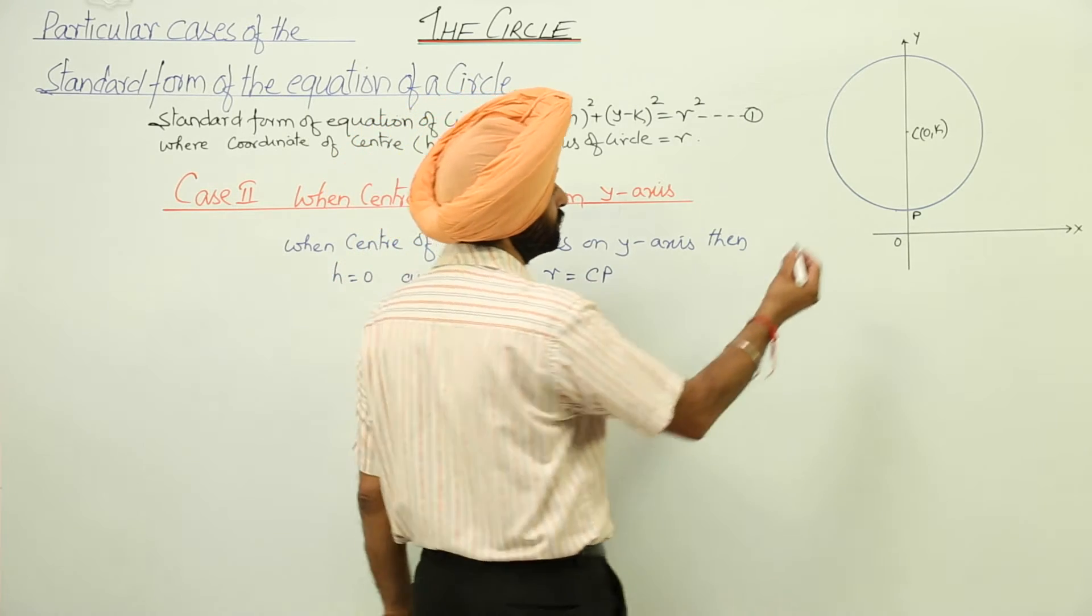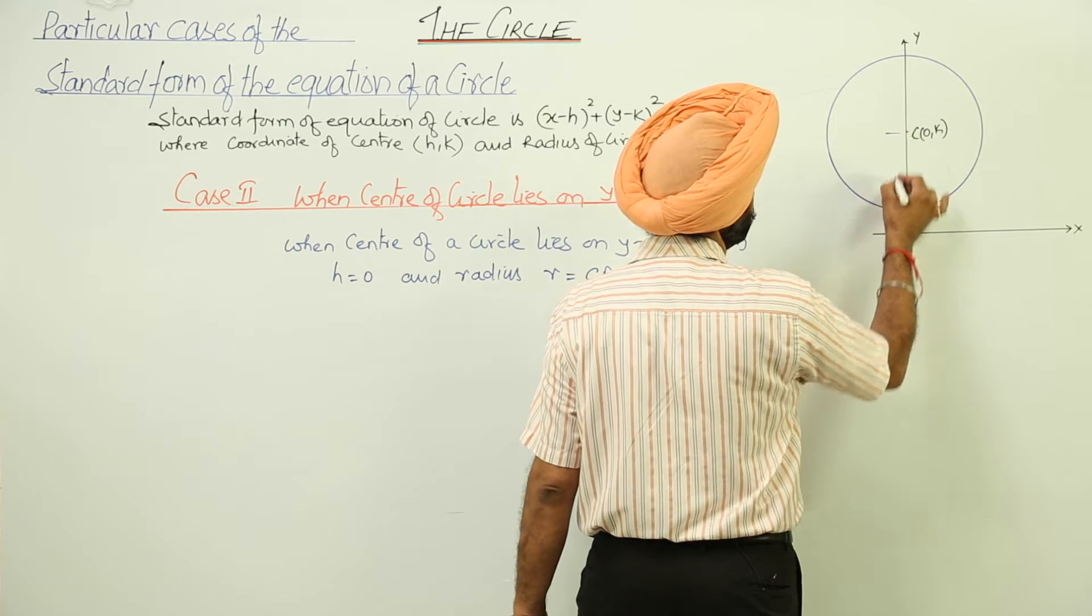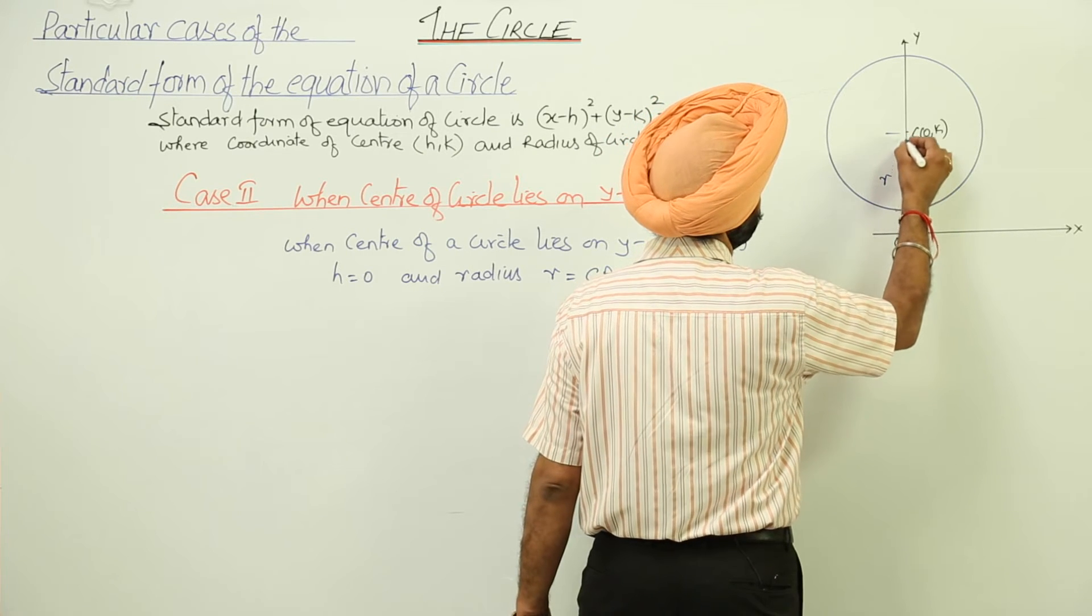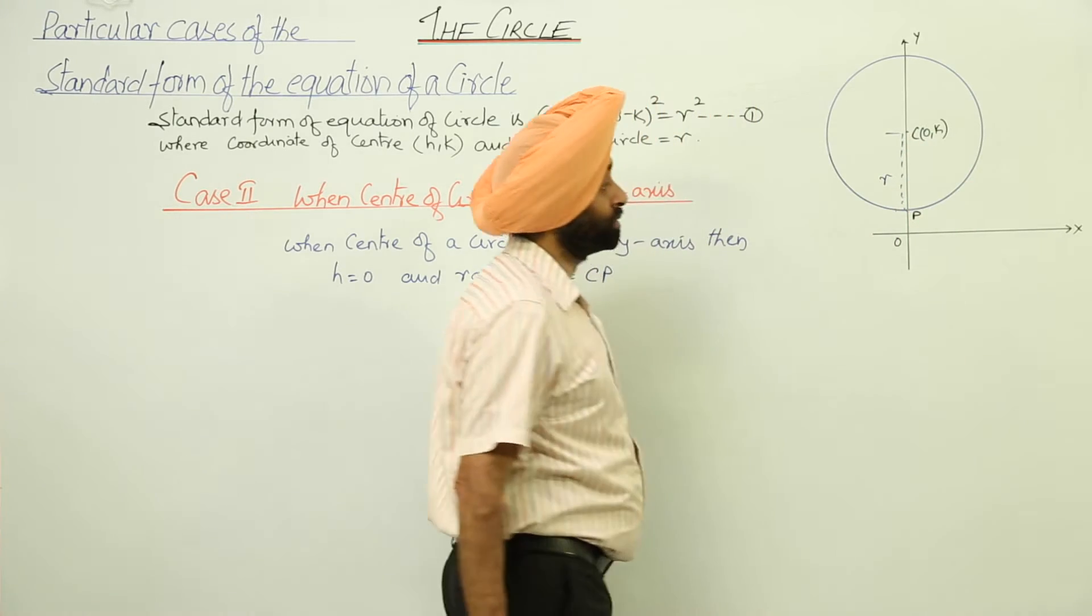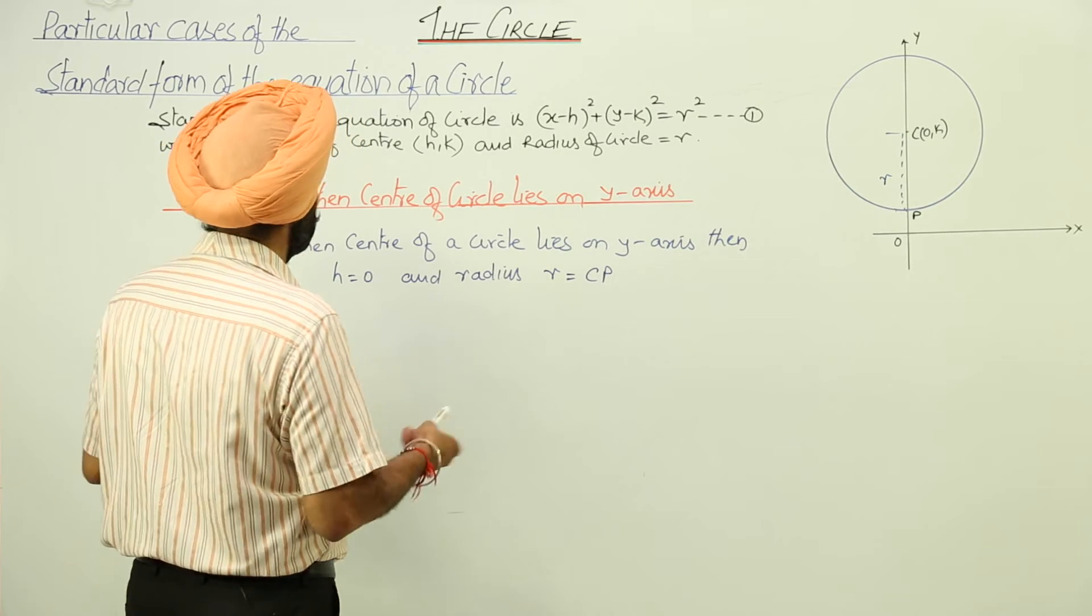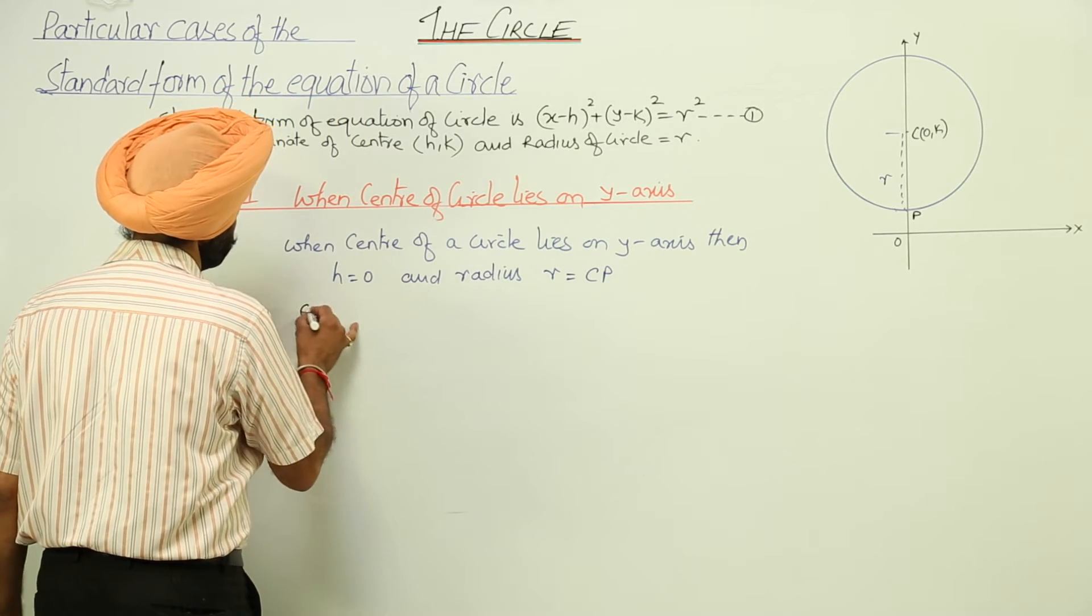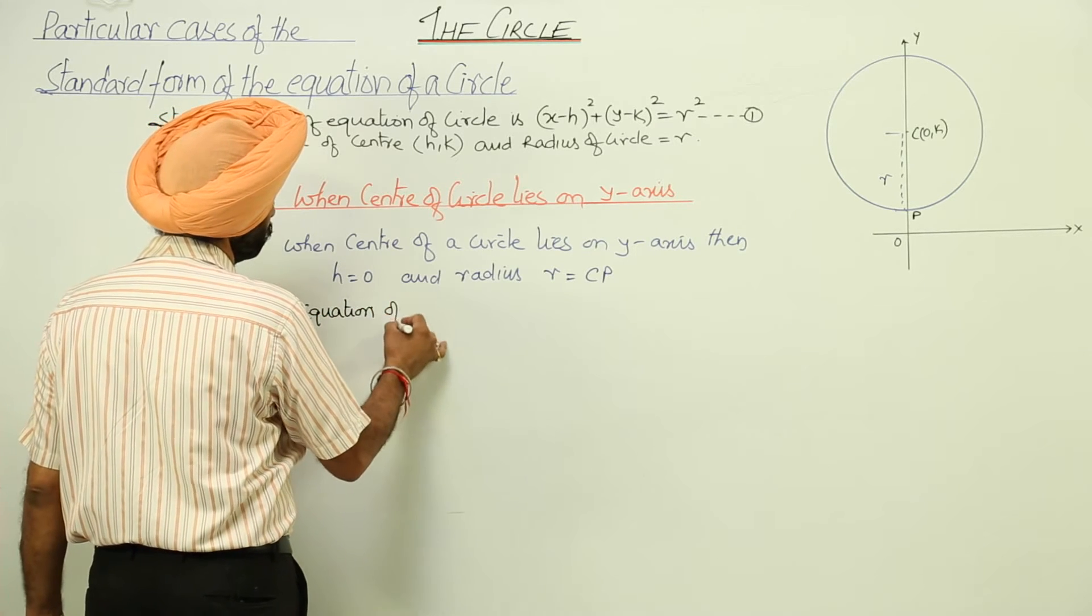We have mentioned here this is C and this is P. From here to here, this is r, this is the radius of a circle, this is r.